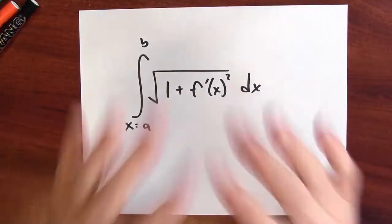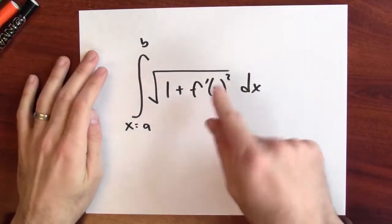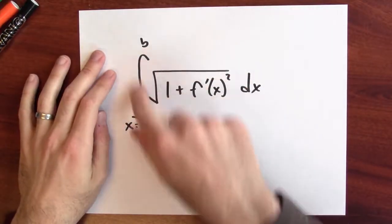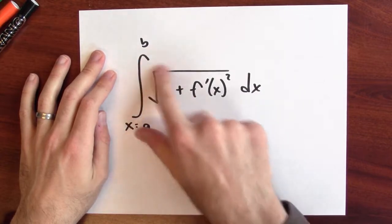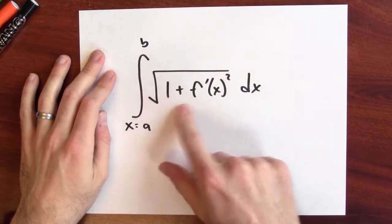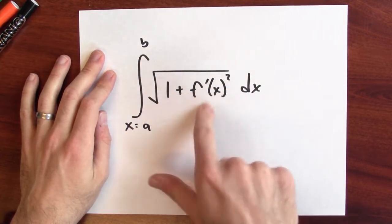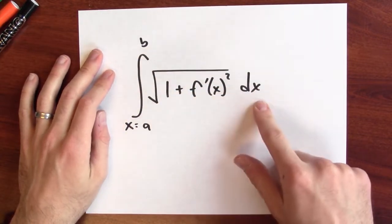We defined arc length using an integral. The integral that we'll be using is this one: integrating from a to b the square root of 1 plus the derivative squared, dx.